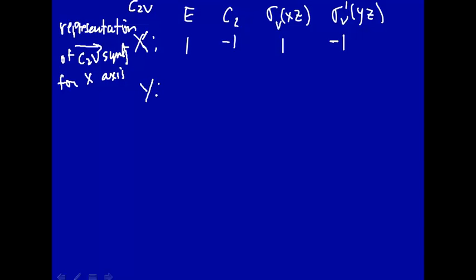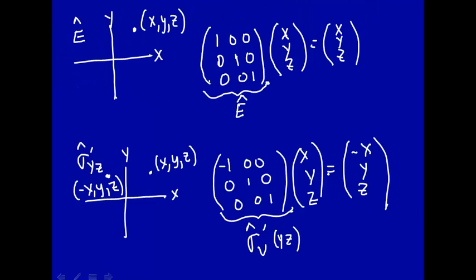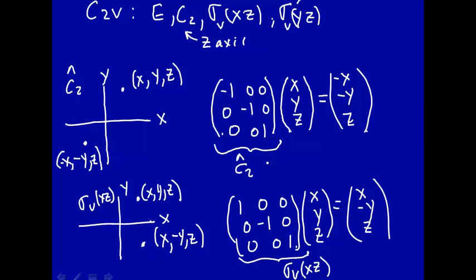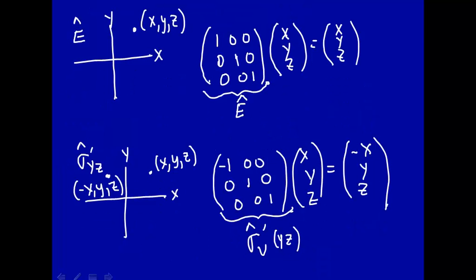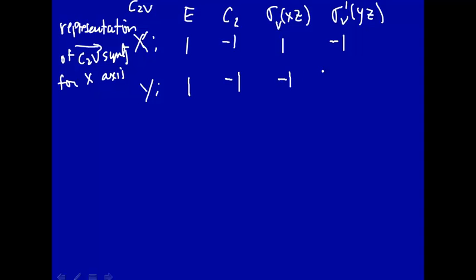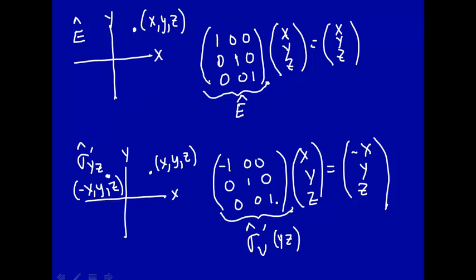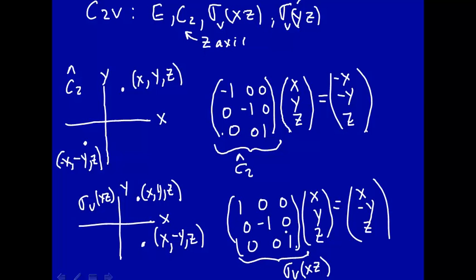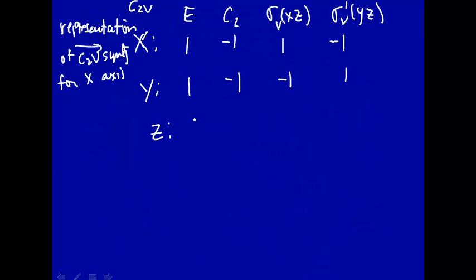Let's do the same thing for Y to get a different representation. For E, Y was 1. For C2, it was minus 1. For sigma-V, it was minus 1. And for sigma-prime, it was 1. So the essence for Y is: 1, minus 1, minus 1, 1. How about the Z axis? For Z, looking at those matrices, the values are 1, 1, 1, and 1. So we can represent how Z behaves in C2V symmetry as all 1s.